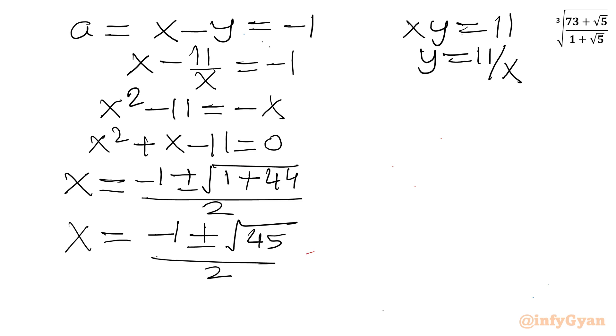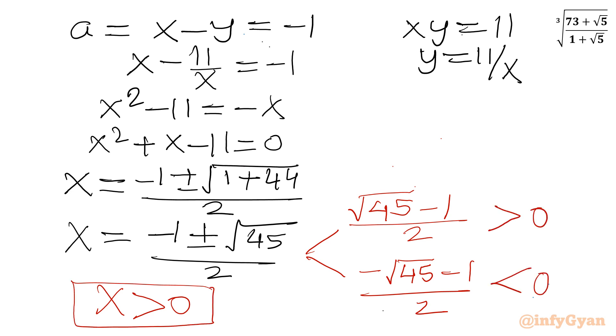Now with plus sign in between, we can write value will be root 45 minus 1 over 2. With minus sign in between, it would be minus root 45 minus 1 over 2. The condition on x was x should be positive for real values. So here we are having positive, here we are having negative. So we can reject the second one. So our final answer becomes x will be equal to square root 45 minus 1 over 2.